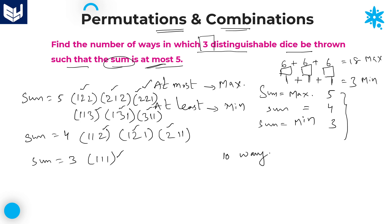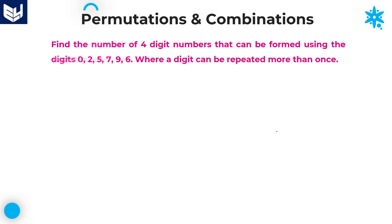When throwing 3 dice such that the sum is at most 5, the number of ways is 10. That is the required answer for this question.